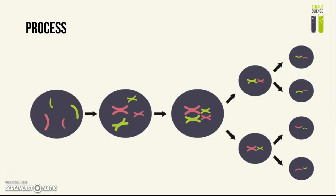Now we're going to look at the process of meiosis itself. It is worth keeping in mind that the syllabus does not require you to remember the specific details of the stages of meiosis, but I'm using this diagram here to help explain it a little better. The first part of meiosis is called meiosis 1, and it is very similar to mitosis. Essentially, the chromosomes get duplicated, then they're lined up, and then they're split into two — and these cells are both diploid cells.